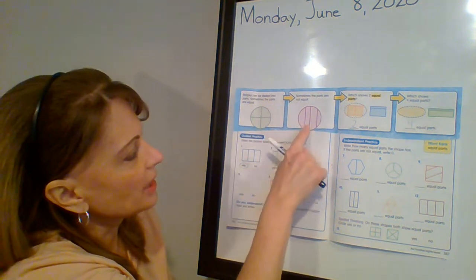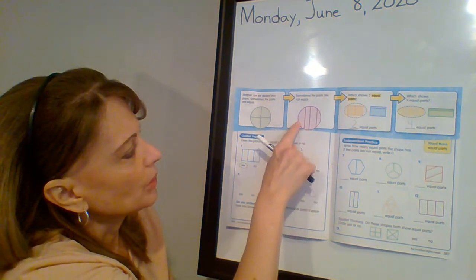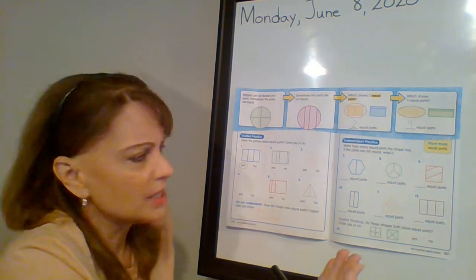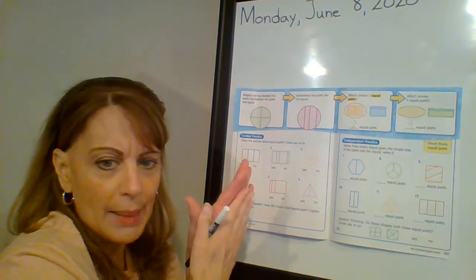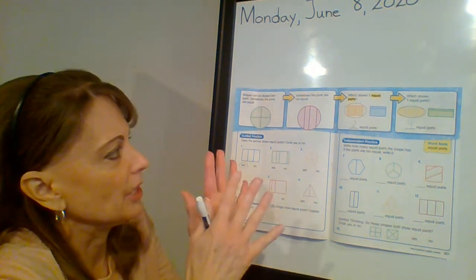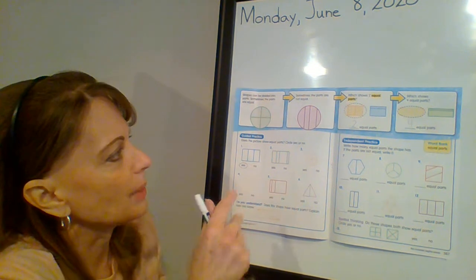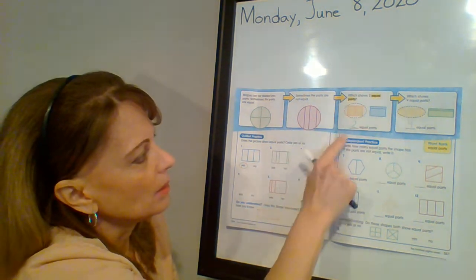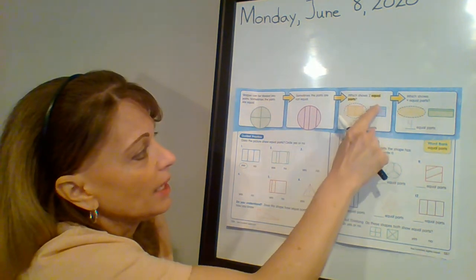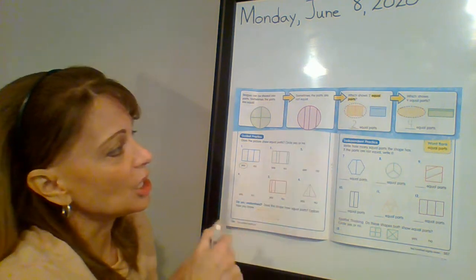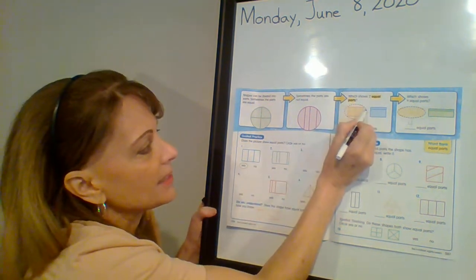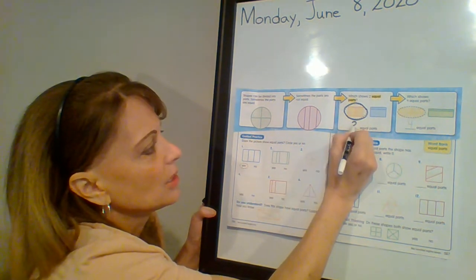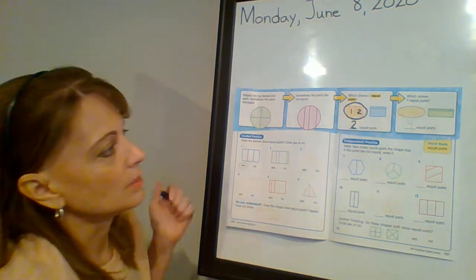But then look at this circle. You can clearly see that every one of those pieces is a different size. If you put them on top of another piece, they would not match. They're not the same size and shape. So it says, which shows two equal parts? Well, this one has two parts and this one has two parts. But this is the only one that has equal parts. And how many equal parts does it have? Two. One, two.